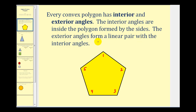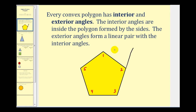The exterior angles form a linear pair with the interior angles. So if we look at angle two, we can either extend this side here to form the exterior angle, or we can extend this other side to form the exterior angle — it doesn't matter which side we extend to form our linear pair. Let's go ahead and extend this side here.